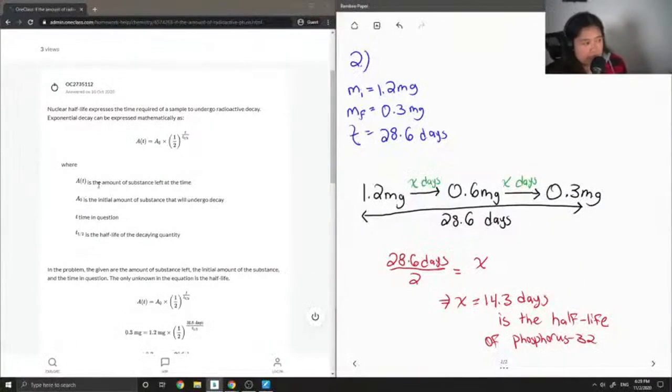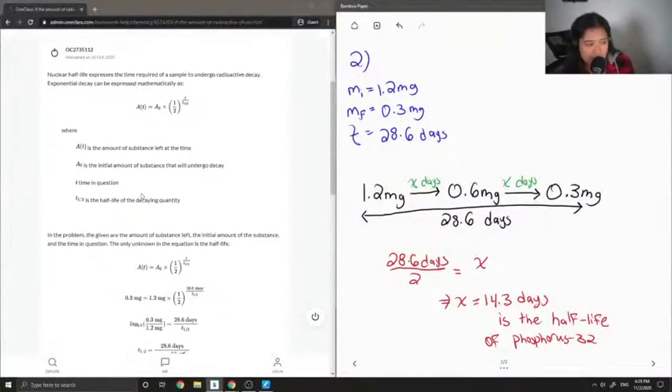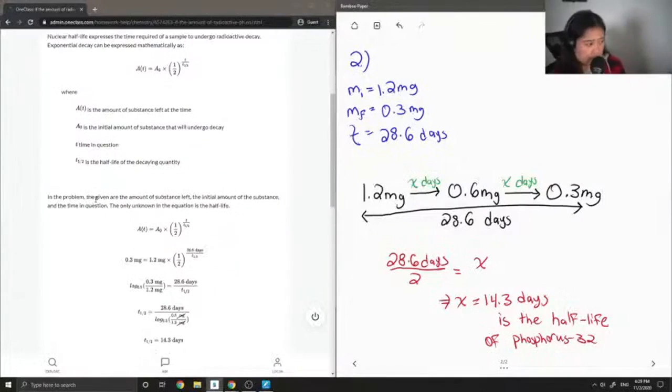So At is the amount of substance left at the time, A0 is the initial amount of substance that will undergo decay, t is the time in question, and then t half-life is the half-life of the decaying quantity.